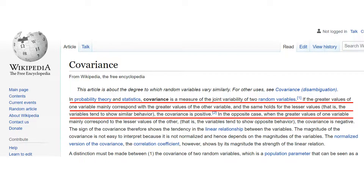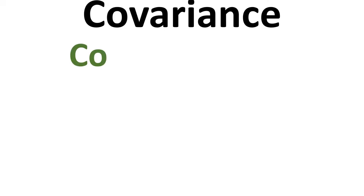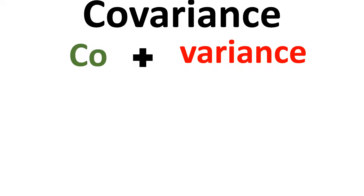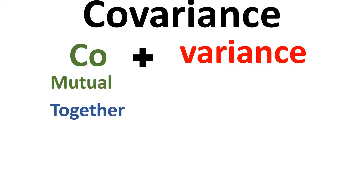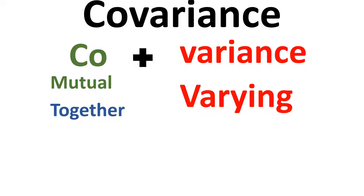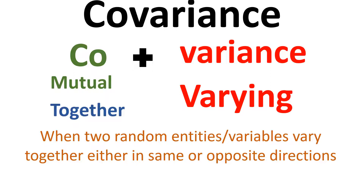As per Wikipedia, this is what Wikipedia has to say about covariance — you can pause the video and go through this definition. Let me make it very simple. Let's break down this word into two parts: 'co' plus 'variance.' 'Co' means mutual or together, and 'variance' is nothing but varying. So we are saying that when two random variables are varying together, either in the same direction or in opposite directions, we are finding the covariance.